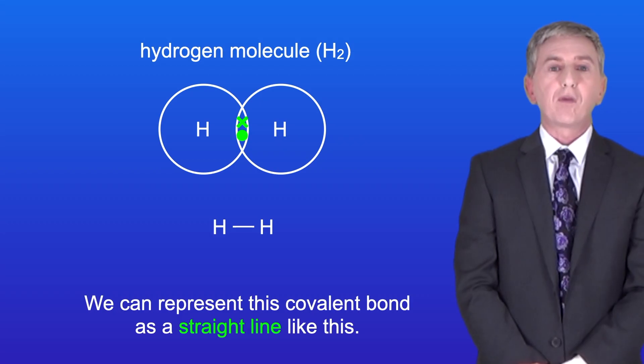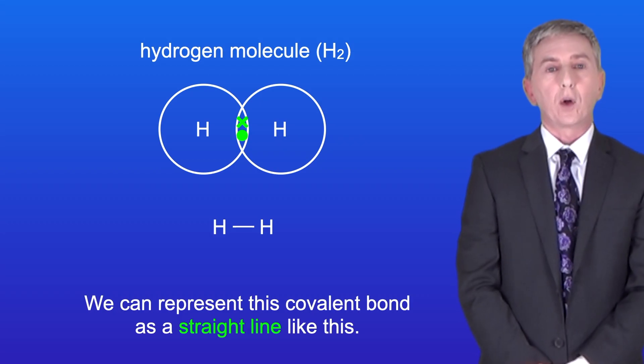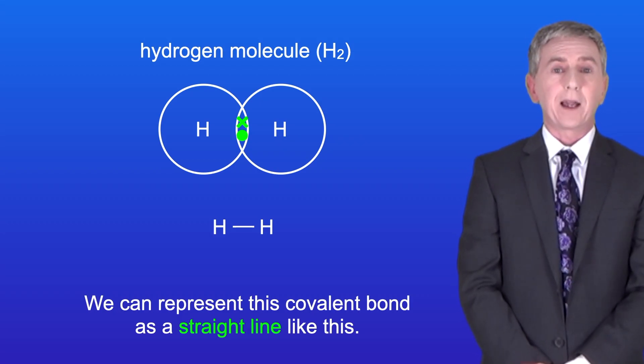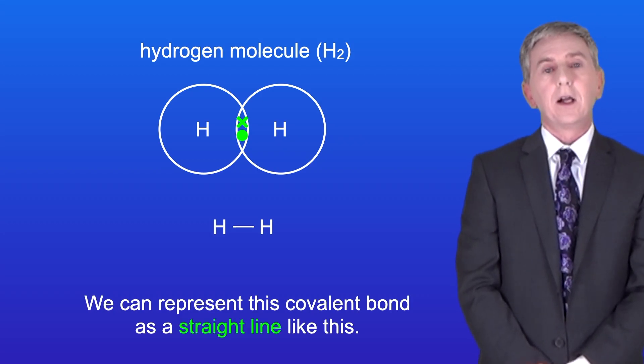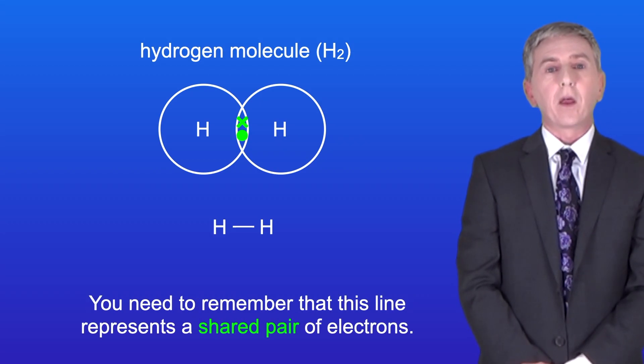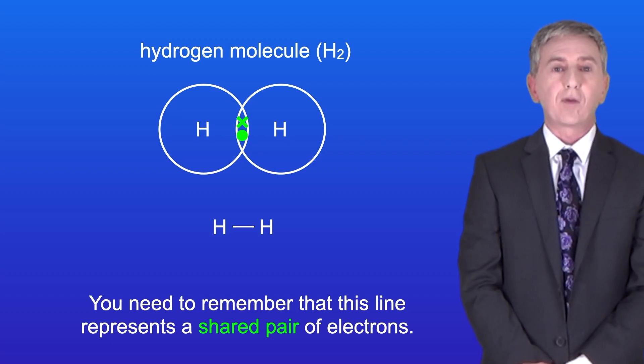We can represent this covalent bond as a straight line, and you need to remember that this line represents a shared pair of electrons.